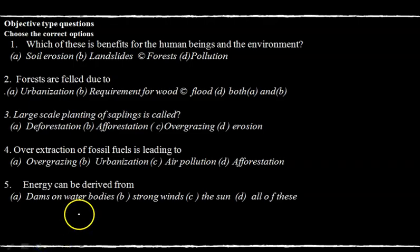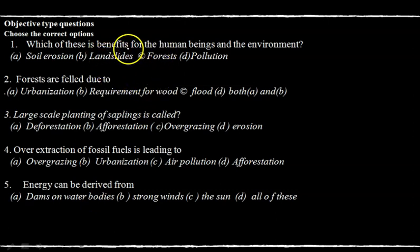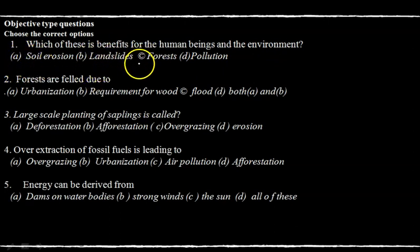I am going to be discussing these question answers in Hindi. Our first exercise is objective type questions — choose the correct options. Question one: which of these is beneficial for human beings and the environment? Soil erosion is harmful, landslides are also harmful, but forests are beneficial for human beings and the environment. Pollution is harmful.